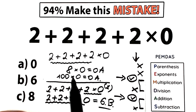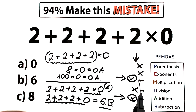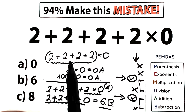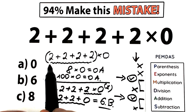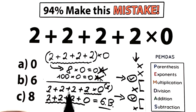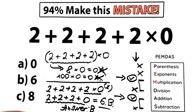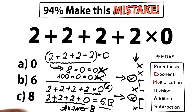A lot of students solve it as 0, which is wrong because you can't add first and then multiply. Of course, if parentheses were present — (2+2+2+2)×0 — then parentheses would be our first step, giving 8 times 0 equals 0, and option A would be correct. But in our case we don't have parentheses, so the correct answer is option B. Multiplication comes before addition. I hope you learned something new — thank you for your time, and have a great day.